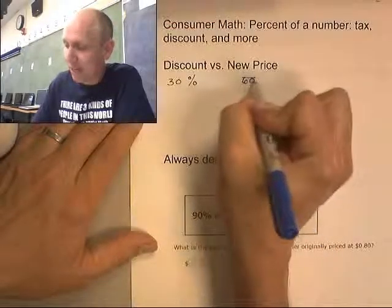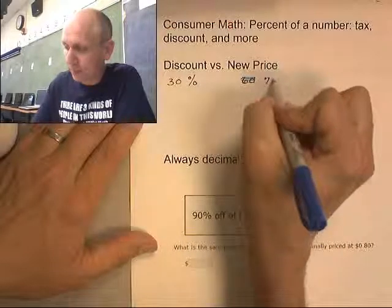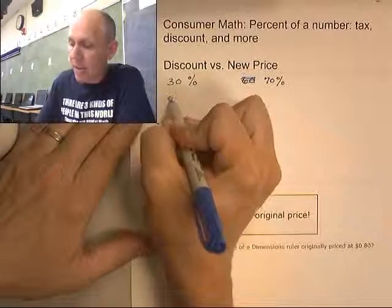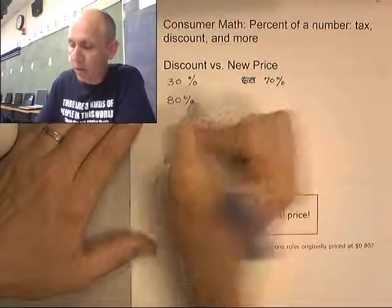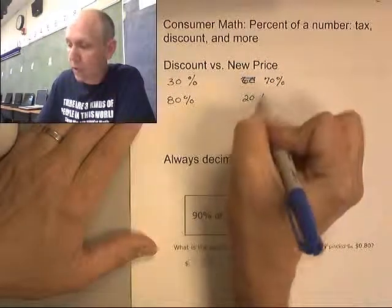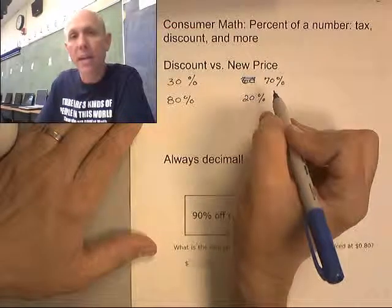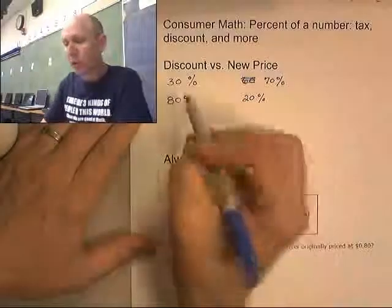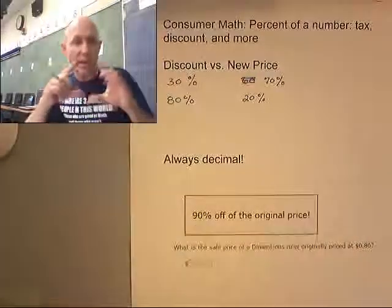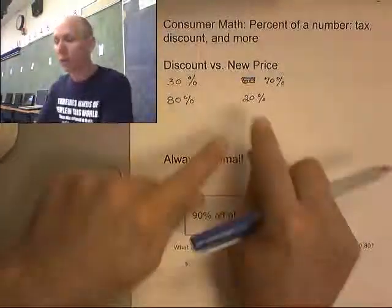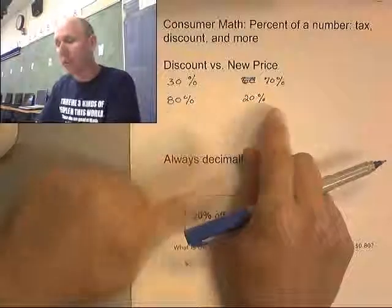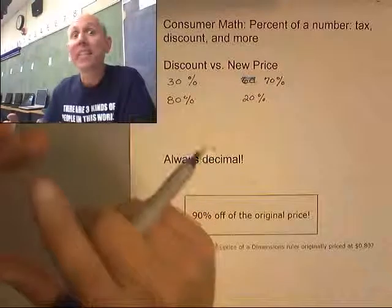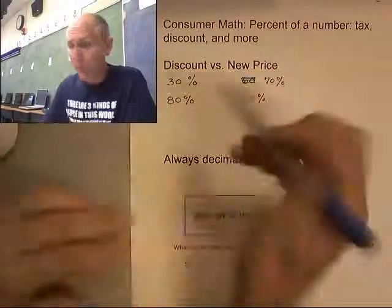70%, right? An 80% discount would mean 20% is what you still have to pay — it's the idea of the back side of this. What are you looking for? Are you trying to find the discounted amount — how much you're going to take off the price — or are you looking for the new price?